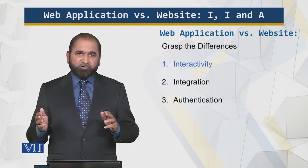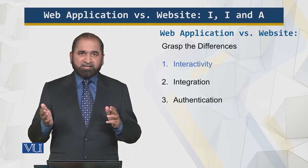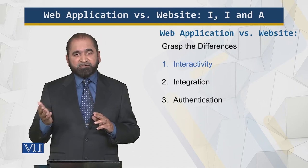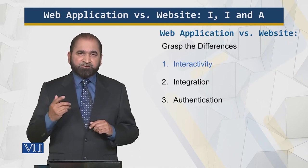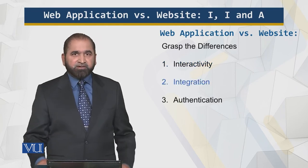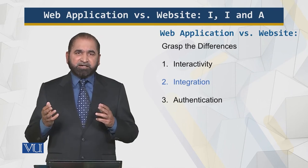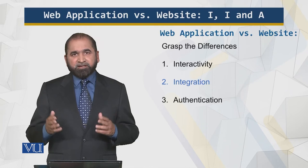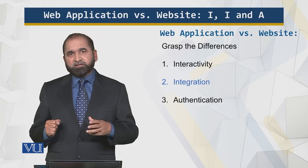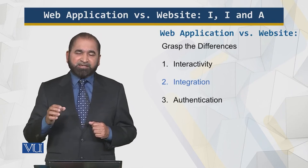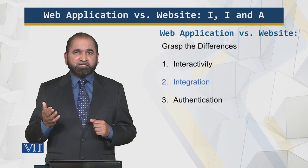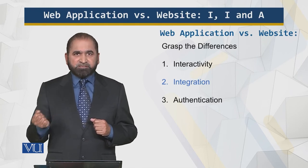For a website, interactivity has less significance and is less of a requirement. But for a web application, interactivity is more critical. Now let's look at the second aspect: integration. Integration means that I have a web presence and need to connect other external systems with my application — for example, connecting a CRM system (customer relationship management) or an ERP system (enterprise resource planning) with my website.